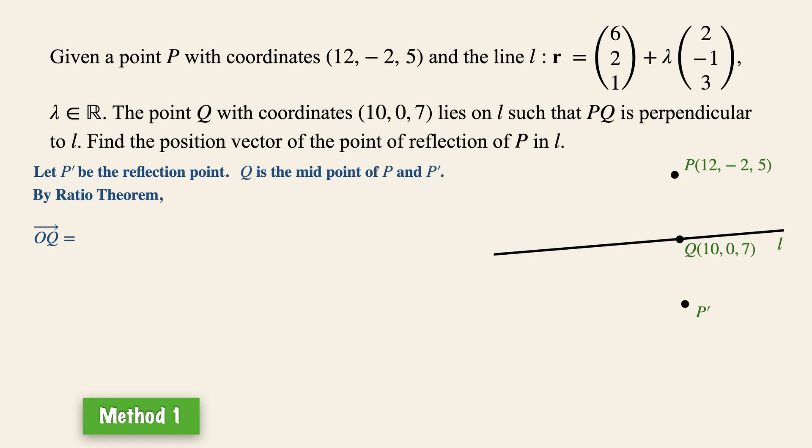Now if you couldn't imagine how to proceed, let's draw the position vectors of P and P' respectively. Now since Q is the midpoint of P and P', it divides the line equally into the ratio of 1 is to 1.